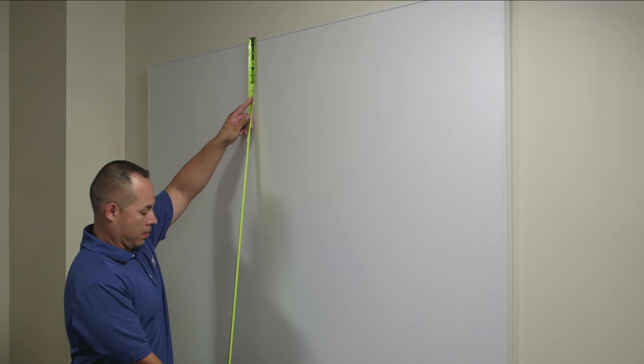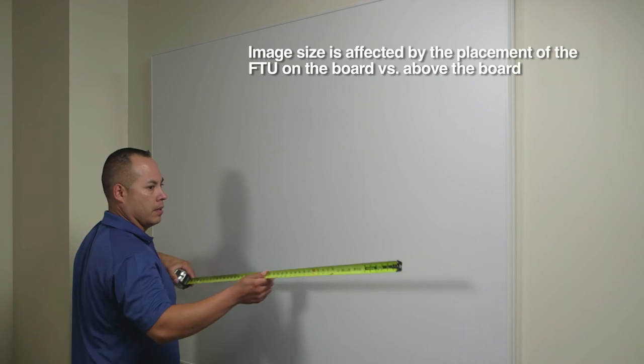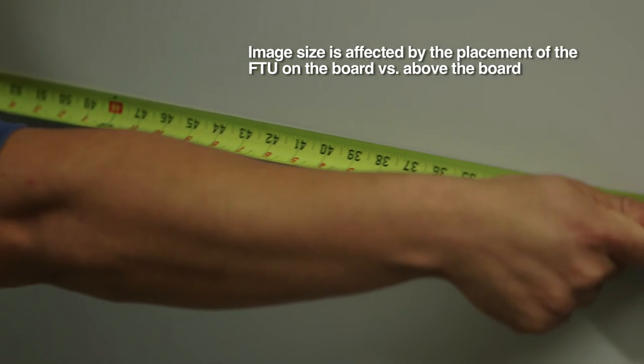We need to measure the height and width of the board to determine the diagonal image size it can support. The native image is 16 to 10 aspect ratio.